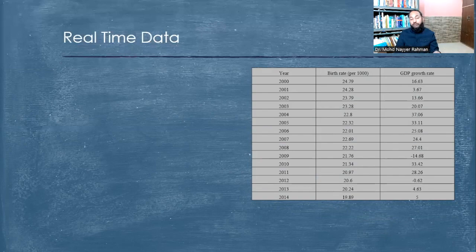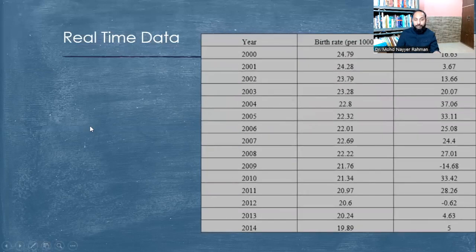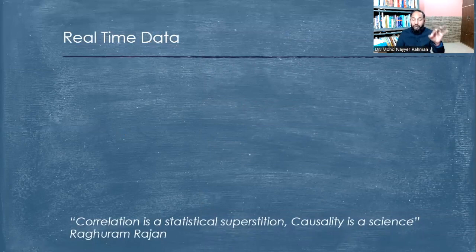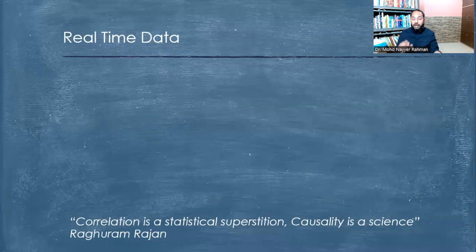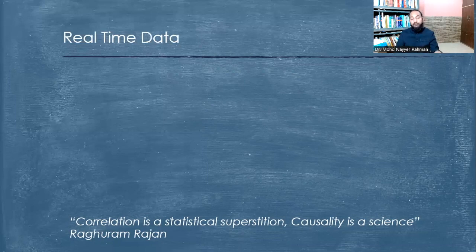This is why the difference between causal and casual relationship is very important. As Raghuram Rajan stated in his book, correlation is a statistical superstition while causality is a science. Econometrics deals with this kind of science — that is, causality, which is cause and effect relationship. The whole focus of using mathematical and statistical procedures with modification is with the objective of finding causality between different variables.